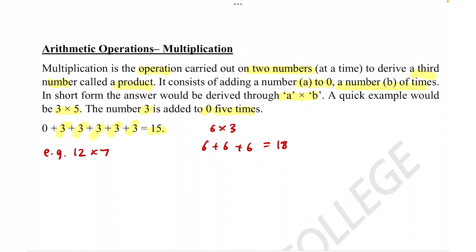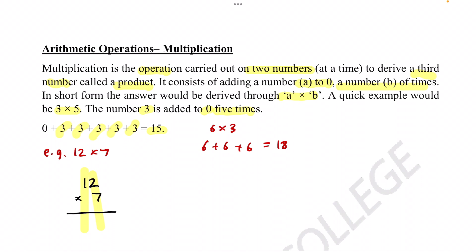So for 12 times 7, you can structure it like this. It is important to line up the numbers properly — the ones and the tens are lined up together. This is quite important because if you mess this up, you might get drastically different answers. So firstly, we times 7 by 2: 7 times 2 is 14, so 1 gets carried over and that'll be 4.